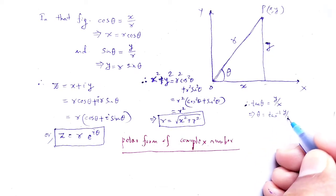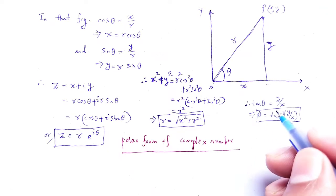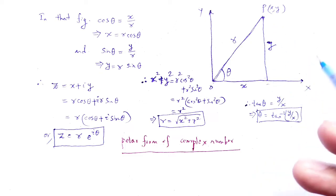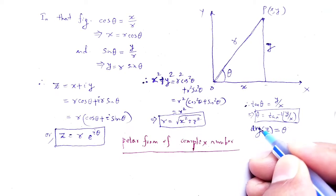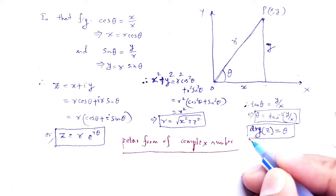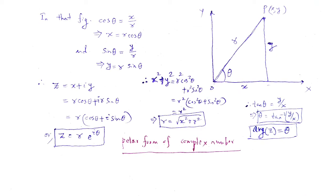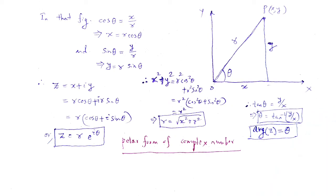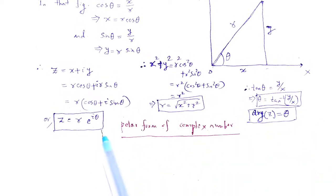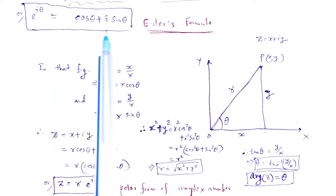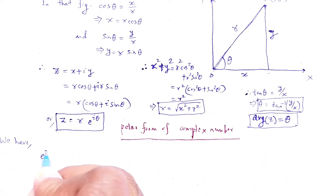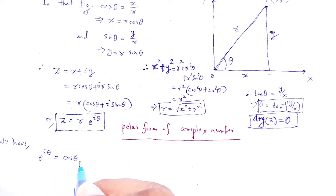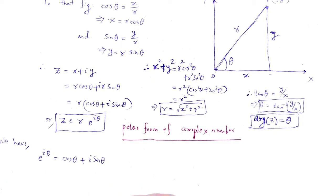And theta equals tan inverse of y by x. That theta is said to be the argument of the complex number. Next, we have e to the power i theta equals cos theta plus i sin theta from Euler's formula.